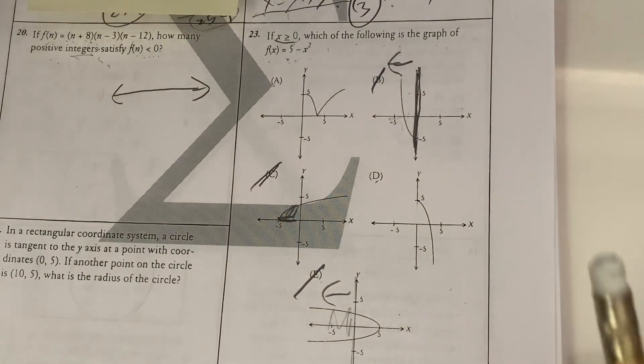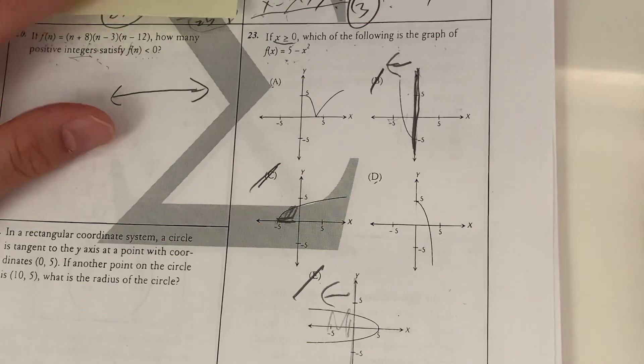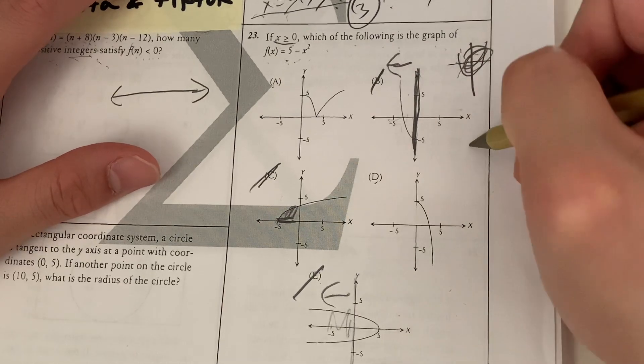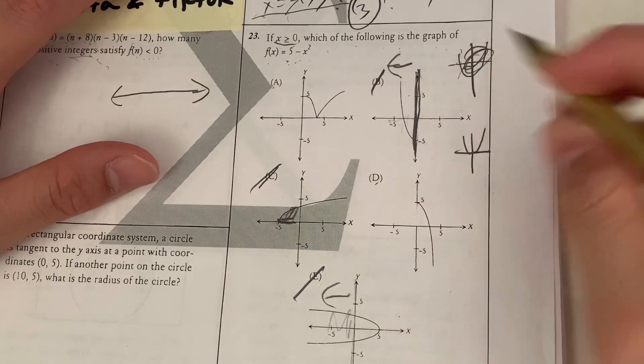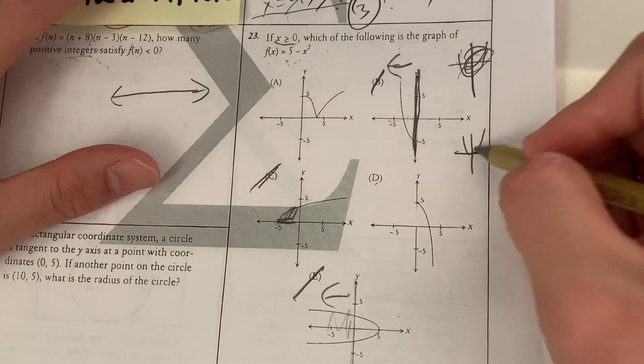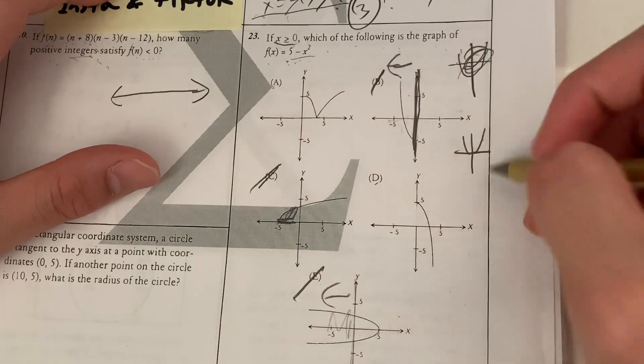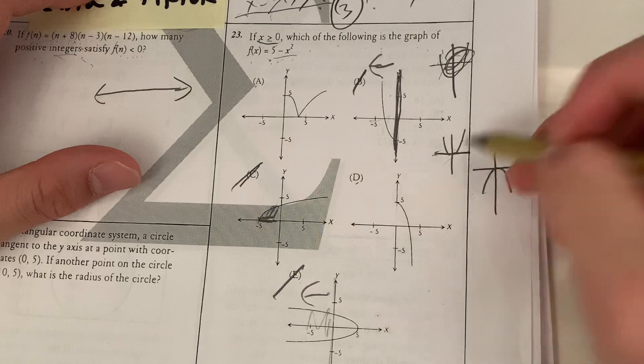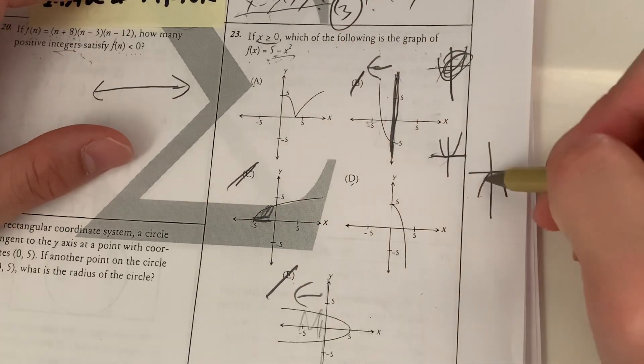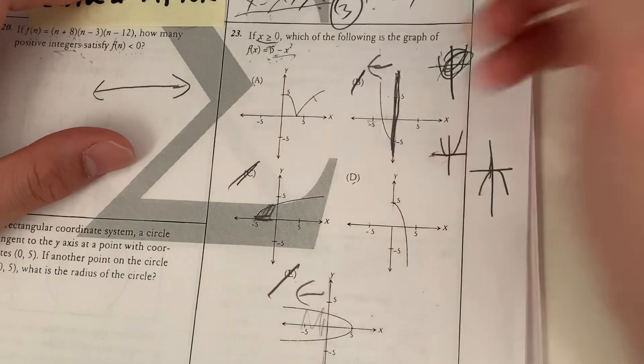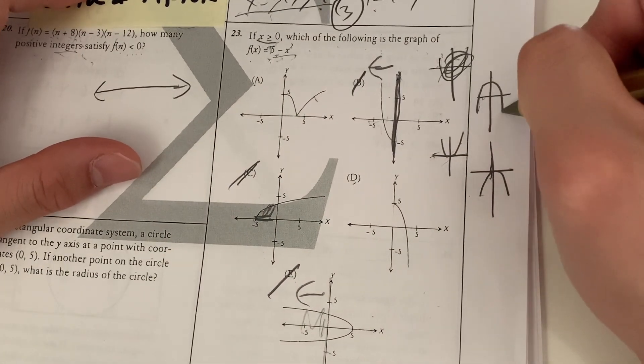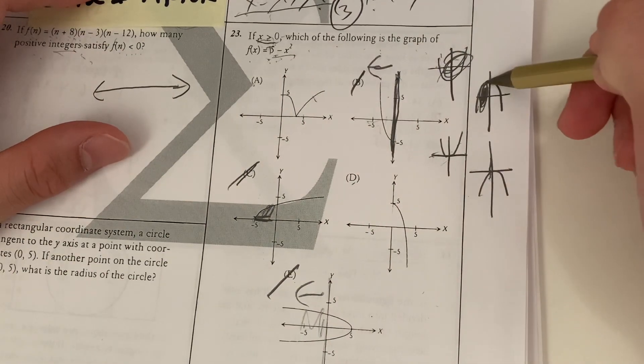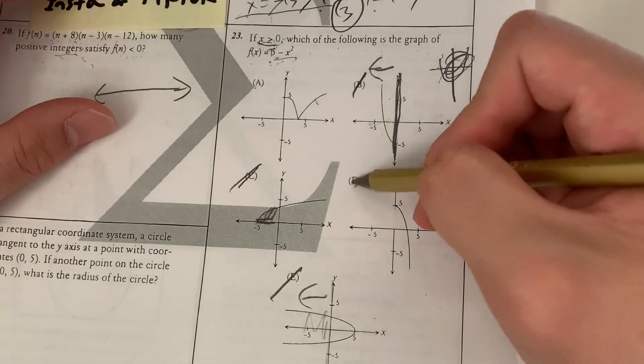Now there are two simple ways to do this. The first way is to know your graphs. If you know your graphs, you know that x² looks like this. Now it's 5 - x². So I know that negative x² is going to be the opposite of this. So it's going to look something like that. I'm going to reflect it across the y axis. Now I know that 5 minus it. So I'm going to move it up by 5 because this is plus 5. So if I move it up by 5, I get this graph right here. The question says that x has to be greater than or equal to 0. So I rule out this part, meaning this part is my only answer, meaning your answer is D.